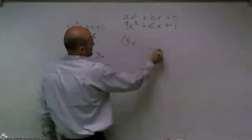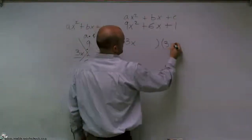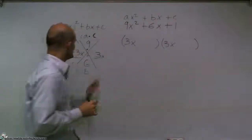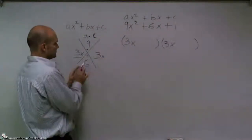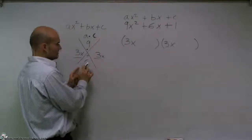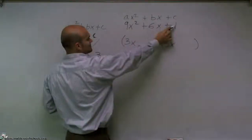Therefore, I can set that 3x times 3x. Because remember, these two numbers have to multiply to give me 9x². Well, then, my last two numbers have to multiply to give me 1.